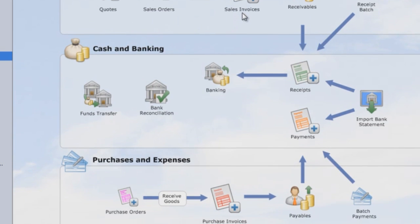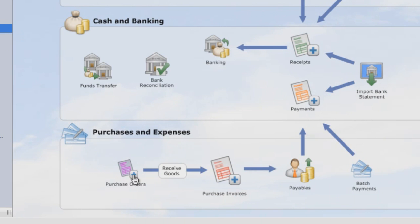The opposite of sales will be the purchase. So you will generate a purchase order to your supplier. When the supplier delivers the goods to you, you will receive the goods with the supplier invoice. And from there you will go into your account payable.